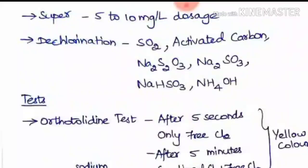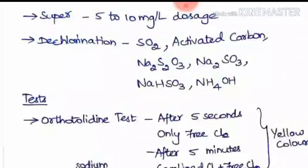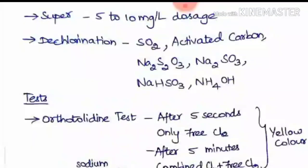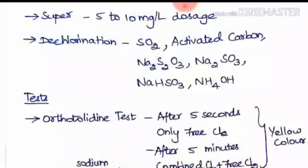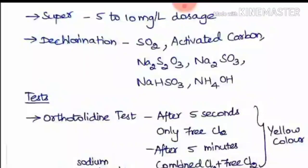There are various tests for finding the intensity of chlorine present in water. The commonly used test is the orthotolidine test. The orthotolidine reagent is added to the water and after 5 seconds a yellow color blooms, giving the free chlorine intensity. This is compared with a standard solution to find the amount of free chlorine. After 5 minutes the color intensity increases, giving the combined chlorine plus free chlorine reading.